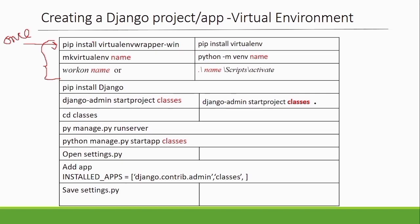Next, after you have virtualwrapper, you create a virtual environment. You can do it with the command `python -m venv name` if using that method, or with the virtualwrapper command if installed that way. The name in red is the name of the virtual environment — you can name it anything like `env` or whatever you want.